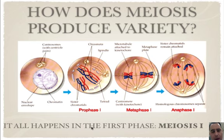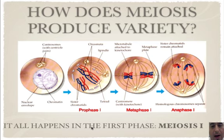Meiosis creates variety. It all happens in the first phase — meiosis I. You have crossing over, the Law of Independent Assortment, and the Law of Segregation.